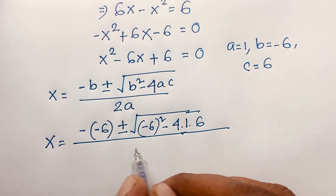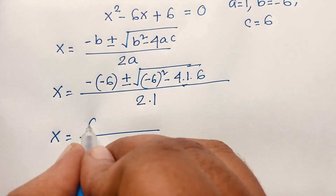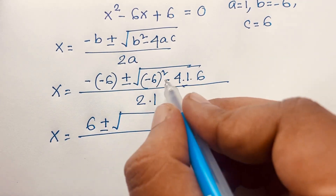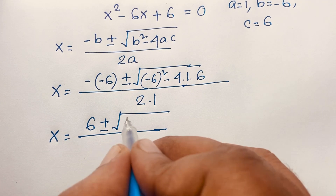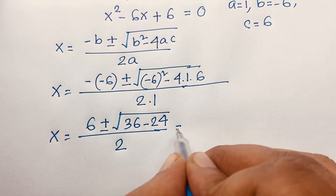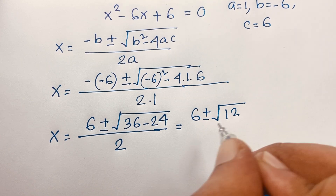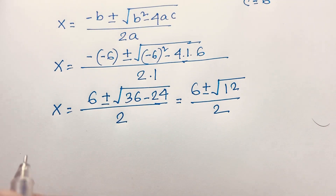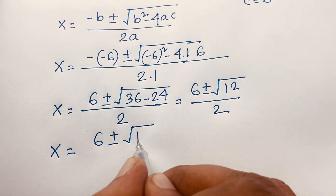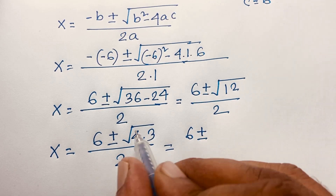And c is 6, over 2a which is 2 times 1, so x equals 6 plus or minus square root of negative 6 squared. Since the exponent is even, that becomes positive 36. So 36 minus 4 times 6 equals 36 minus 24, which gives us 12, over 2. So x equals 6 plus or minus square root of 12 over 2. We can write 12 as 4 times 3.